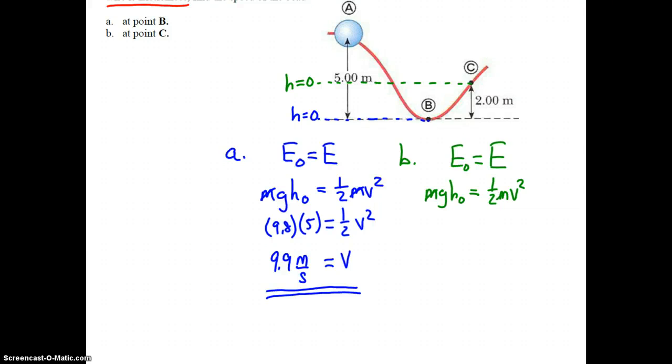You can see the mass cancels. Substitute, G is 9.8, but our initial height here is not 5. Our height above point C, since C is 2 meters from the bottom, would be 5 minus 2, which is 3, equals one-half V squared. Do whatever algebra steps you need to to solve for V. Checking your answer, you should have gotten 7.7 meters per second.